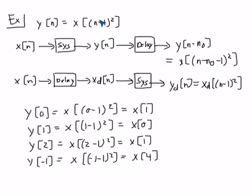That means we only ever see values of x for positive indices, not negative indices. This gives us a way to think about setting up a counter-example to show that a shift in the input does not necessarily lead to a shift in the output.